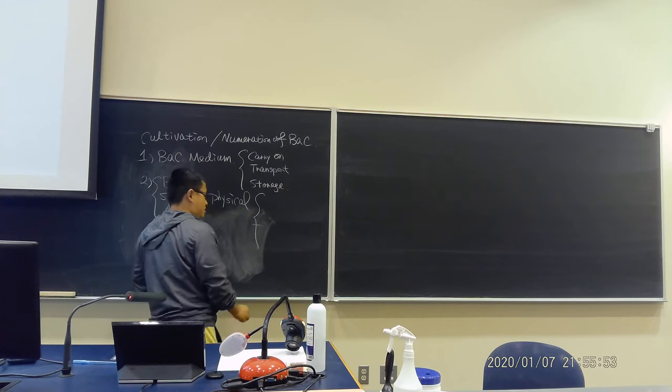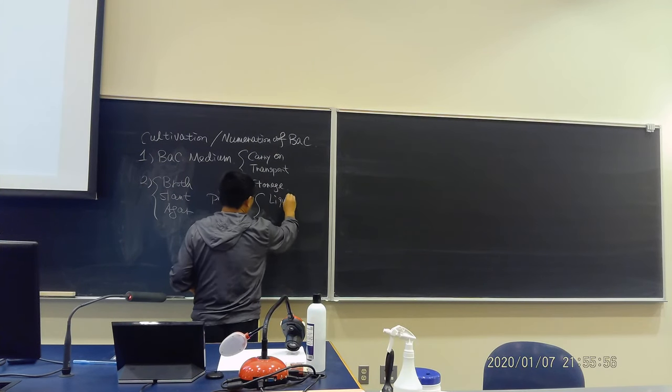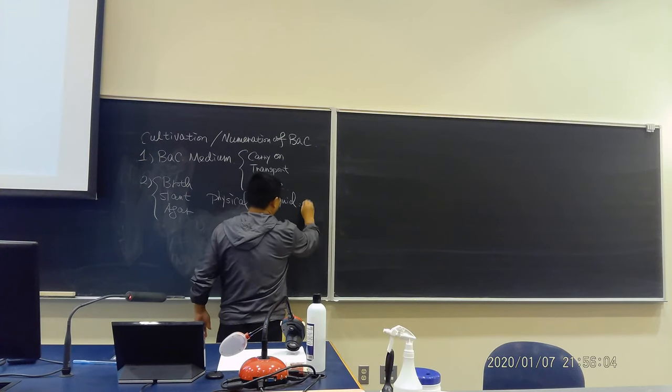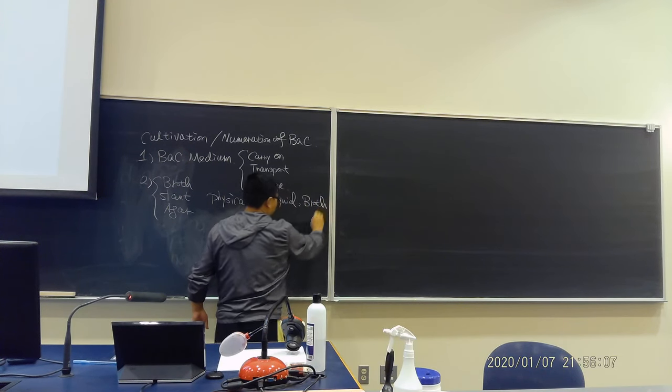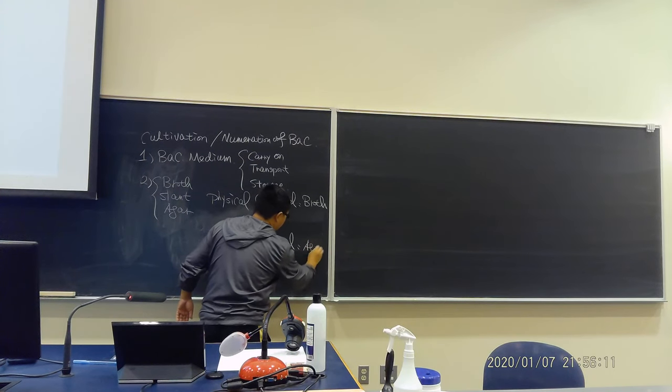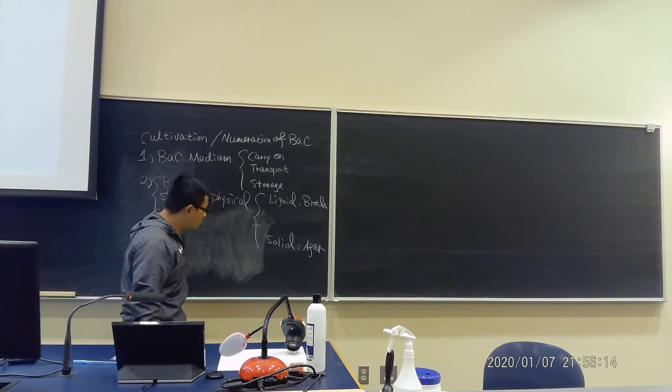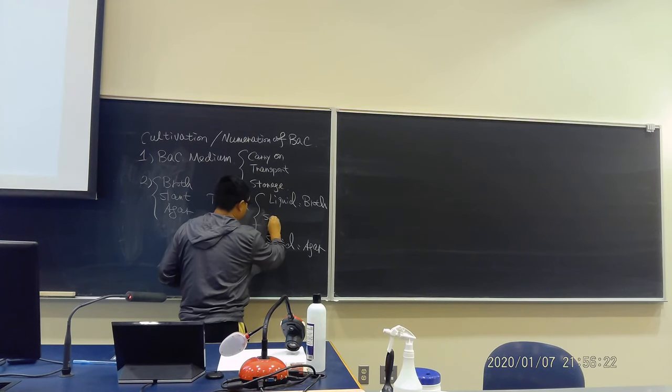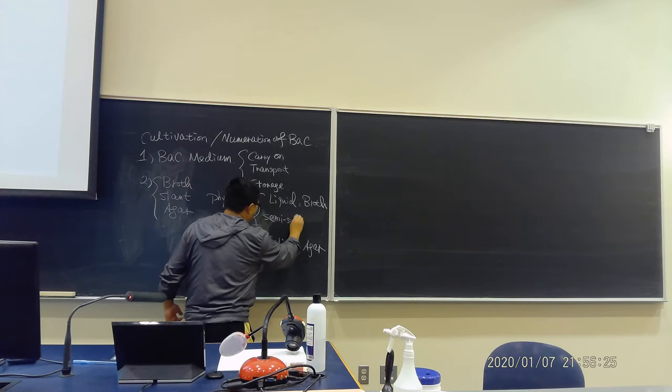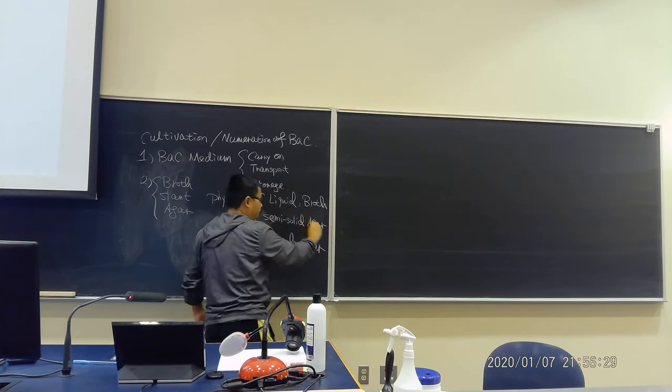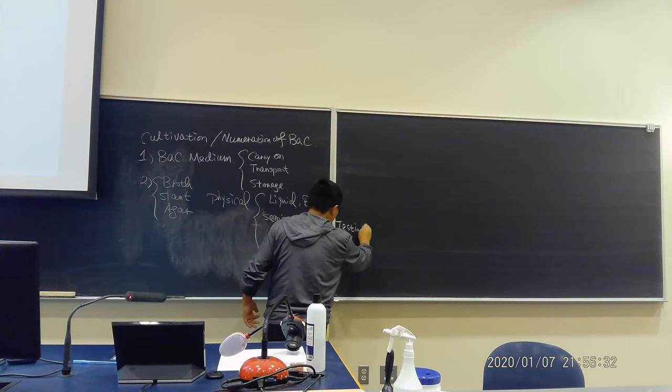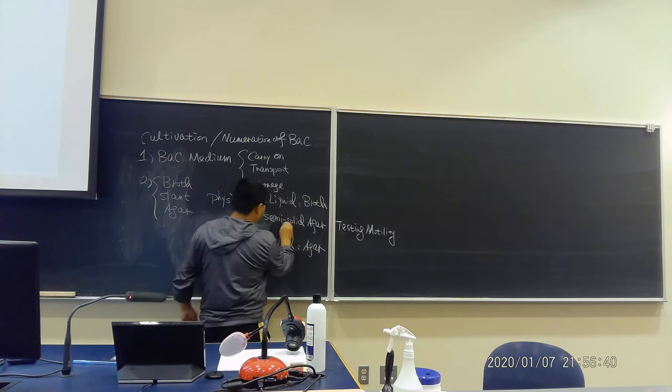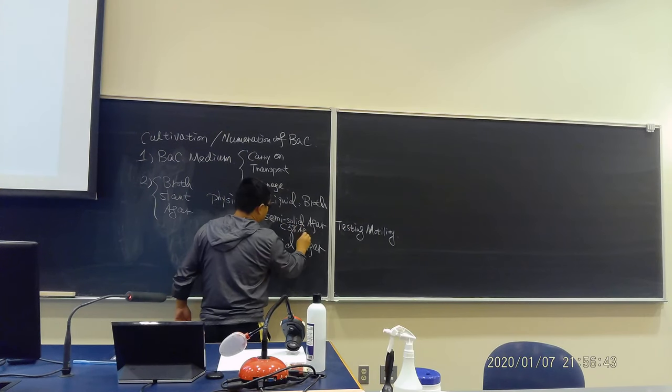These materials are very important. We will practice next Thursday and also Tuesday's lab for these basic information. I want to make clear here, we are talking about the last 20 slides of this lecture. We are talking about cultivation and numeration of bacteria. What is the major sample behind this? Bacteria media. Because we need a media to carry on, to transport, to storage bacteria.